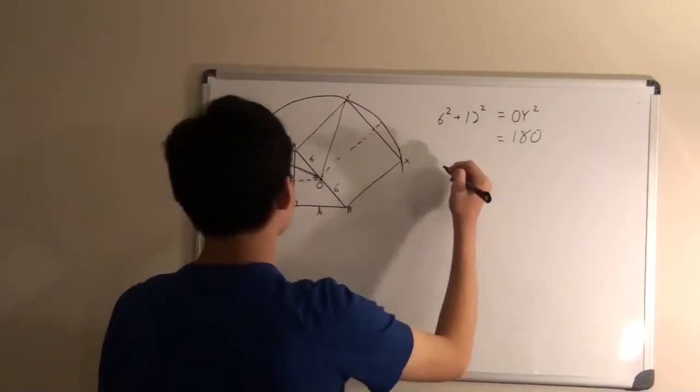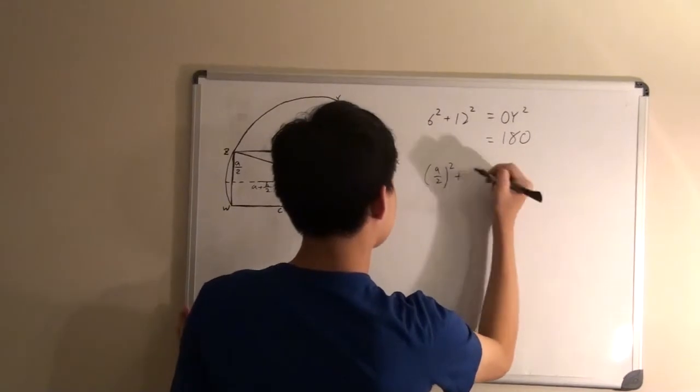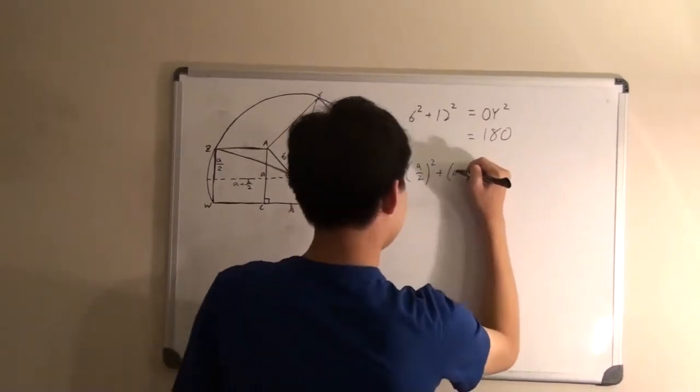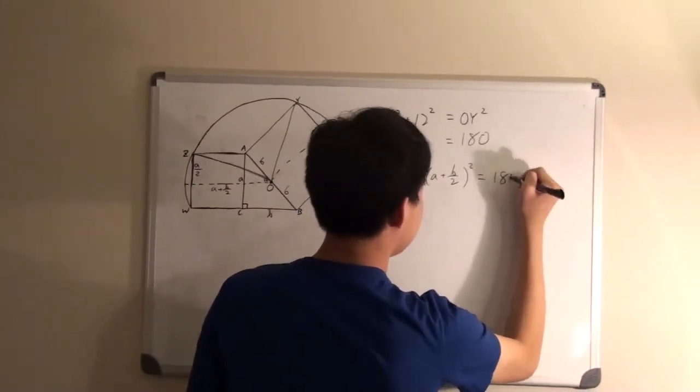And so our next equation would be A over 2 squared plus A plus B over 2 squared would be equal to 180.